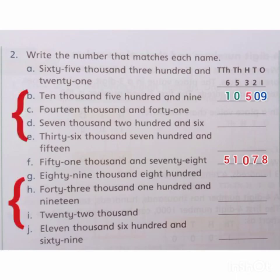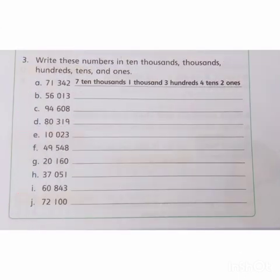Do complete remaining parts of question number 2. Question number 3, write these numbers in 10,000s, thousands, hundreds, tens, and ones. According to instructions of question, 5 digit numbers ko, unki place value mein, write kareenge. Part A has been done, we will start part B.